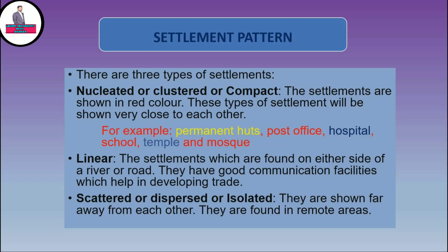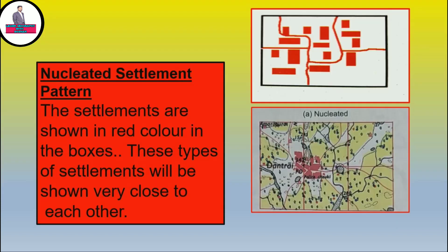Now let us discuss one by one how these settlement patterns are shown on a topographical map. The first one is nucleated. You can see the red boxes are settlements and these red boxes are shown close to each other, so we can interpret and say that it is coming under nucleated settlement pattern. You would observe that these are very close to each other, so they will be termed as nucleated.